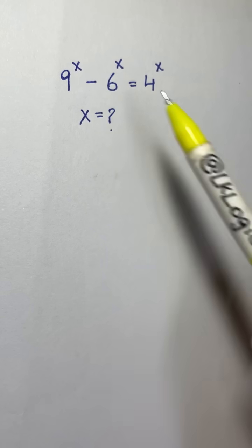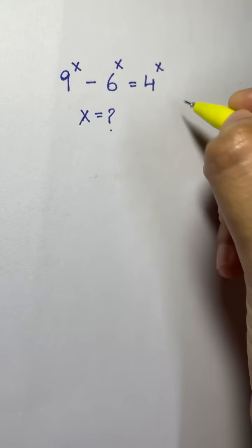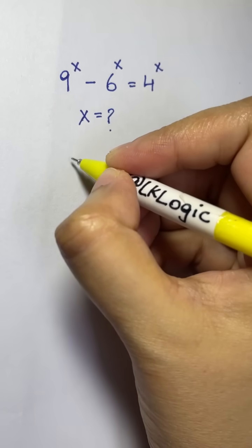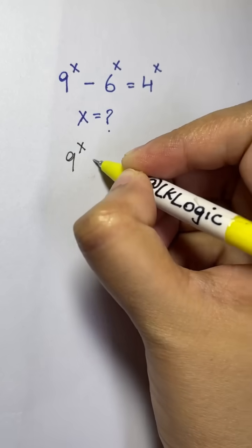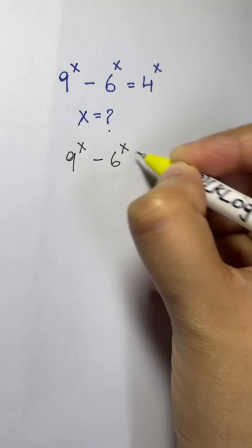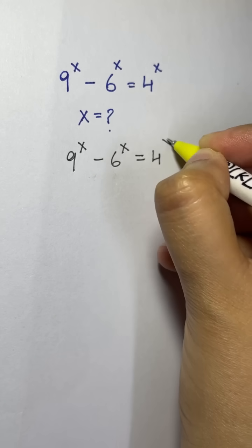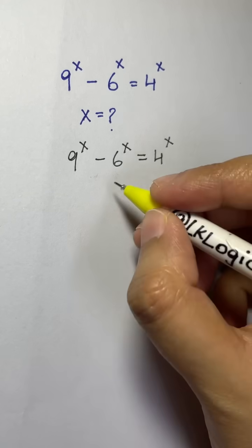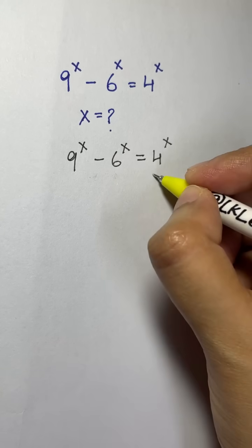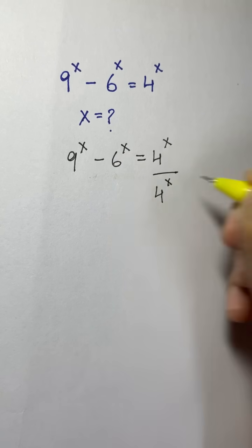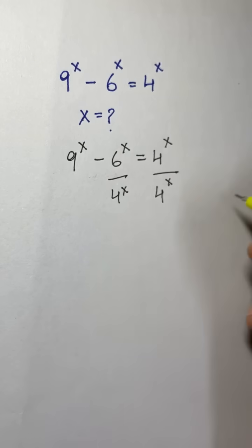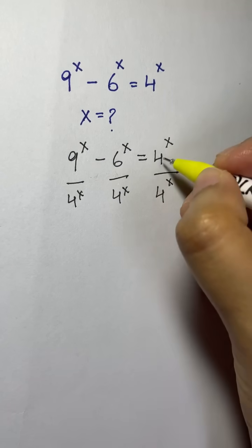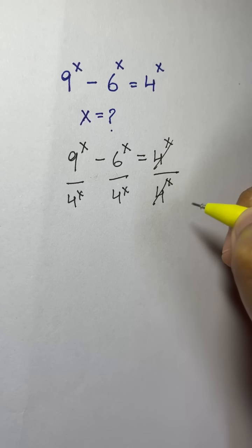The first step is to write the equation back: 9 to the power of x minus 6 to the power of x equals 4 to the power of x. Now I'm going to divide both sides by 4 to the power of x. On the right side this gets cancelled out, leaving 1.